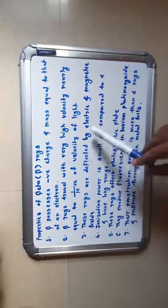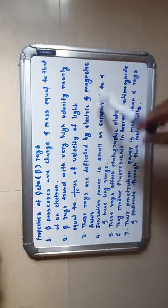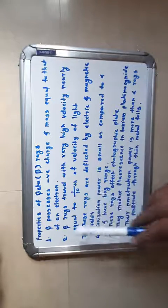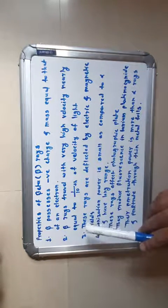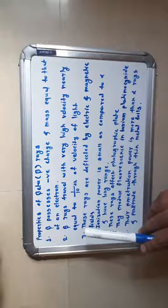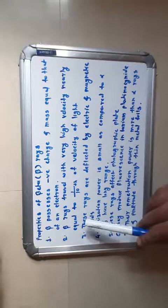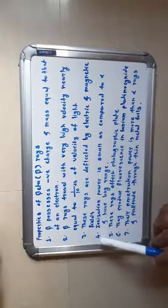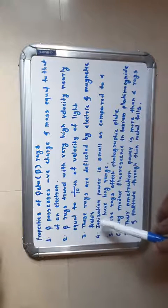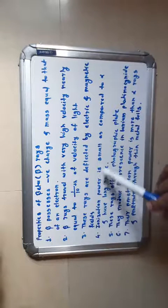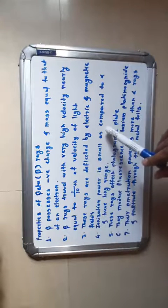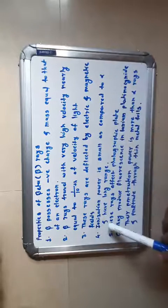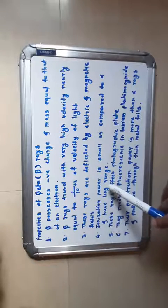Third property: these rays are deflected by electric and magnetic fields. Fourth property: their ionization power is small as compared to alpha rays, but they have a long range.